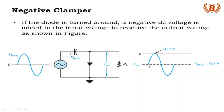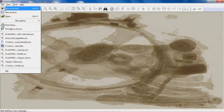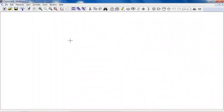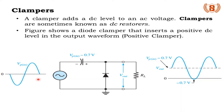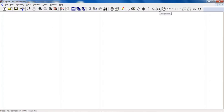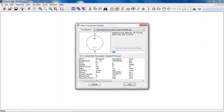We will now move on to the simulation of positive and negative clamper circuits using LTSpice. Open LTSpice and go to File > New Schematic. The components required to design the clamper circuit are: a diode, a voltage source, a capacitor, a load resistor, and a ground.